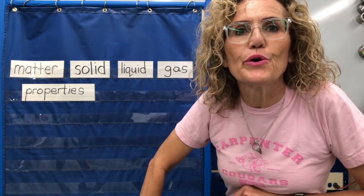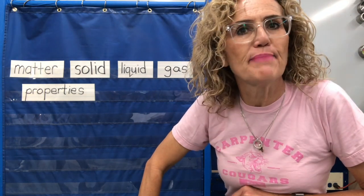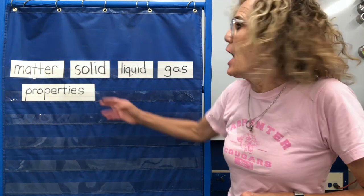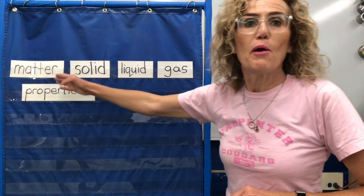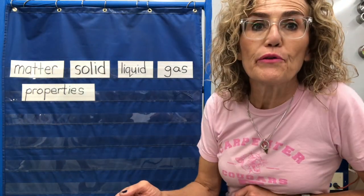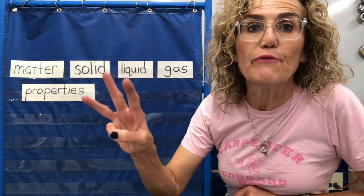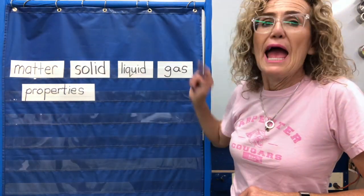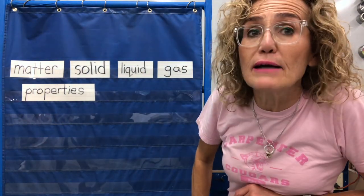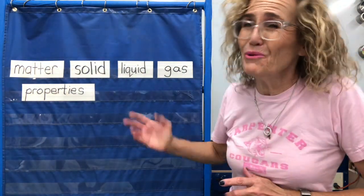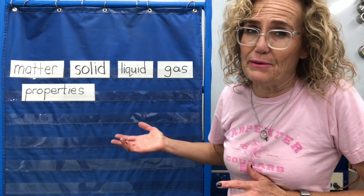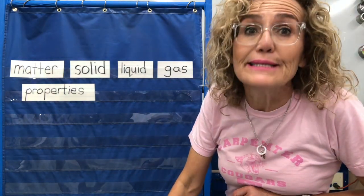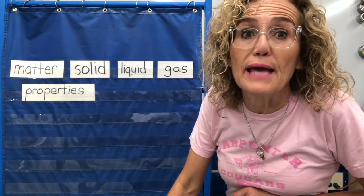Hello, second-grade cougars. It's Mrs. Belitesh again, and look, we're kind of back at the beginning. We've been talking about matter. Matter on Earth comes in three forms: solid, liquid, and gas. We've really talked about solids and liquids. We haven't really talked about gas, and we're not going to spend very much time this year talking about gas.